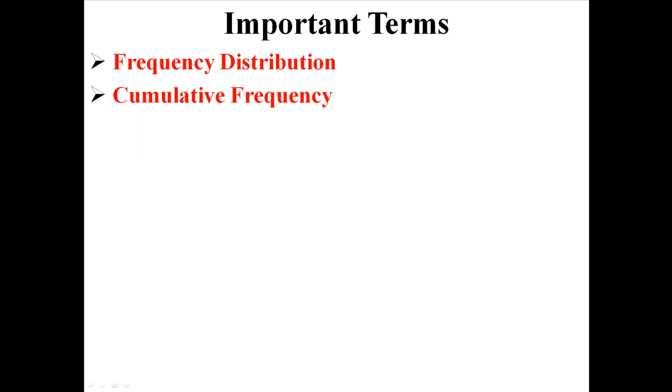So that is the frequency distribution and the cumulative frequency table. Those are just two different ways of showing qualitative data in a way that's a little bit easier to look at than raw data.